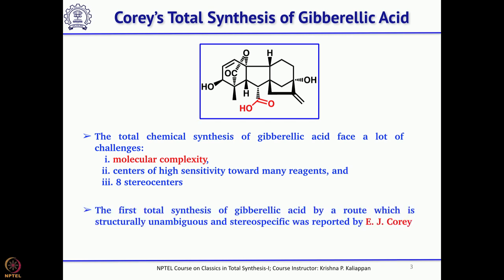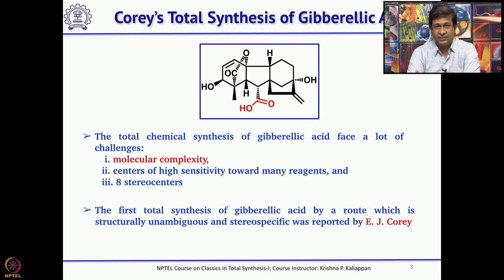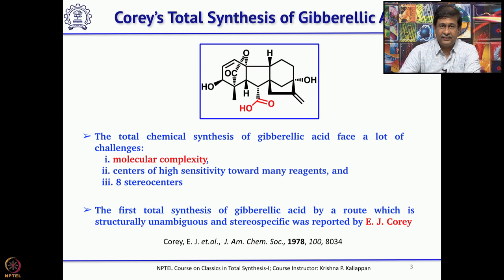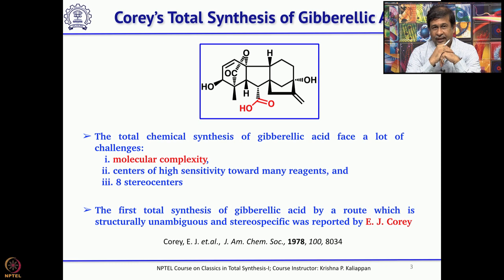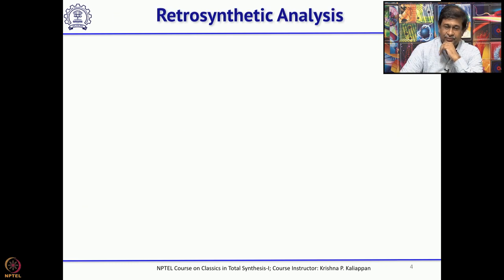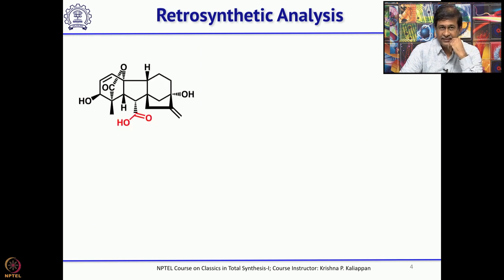Nevertheless, the first total synthesis of gibberellic acid was reported by none other than Nobel Laureate E.J. Corey. His synthesis involved a Diels-Alder reaction, an intramolecular Diels-Alder reaction, iodolactonization, epoxylactonization, and radical cyclization. These are the key reactions which Corey successfully used in the synthesis of gibberellic acid.